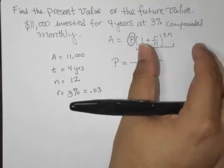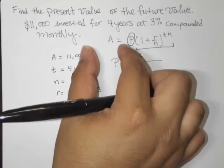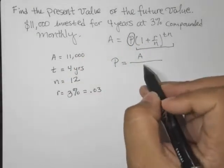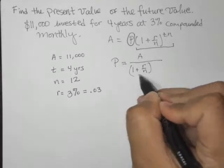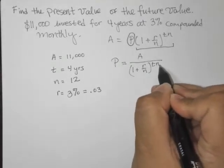So that actually makes it really easy. If you can just picture, just put it right underneath here. So that's what we're going to do. We're going to say 1 plus r over n in parentheses to the tn. All right.